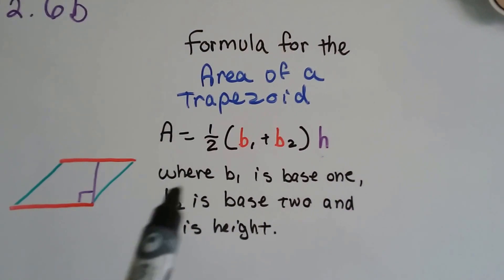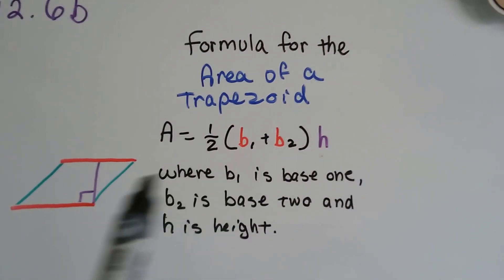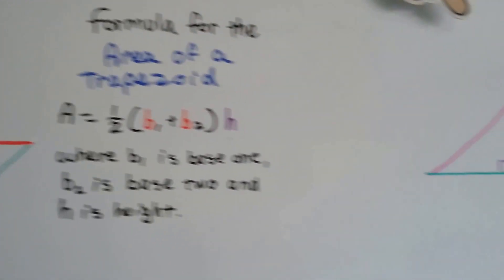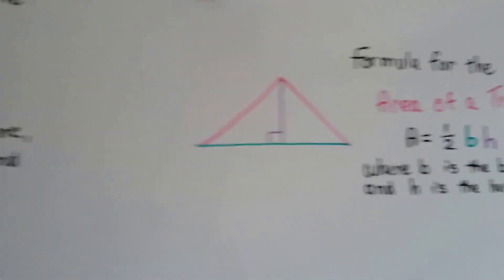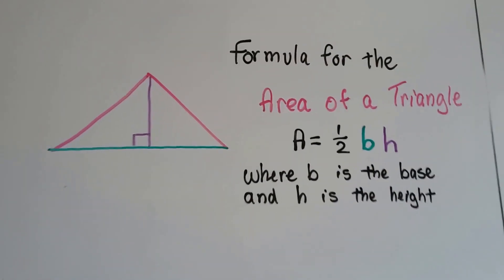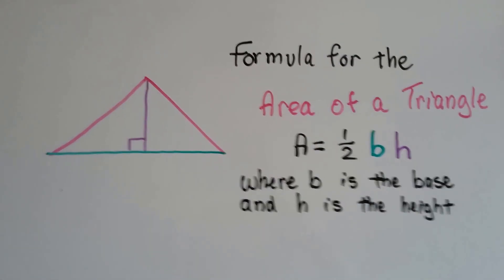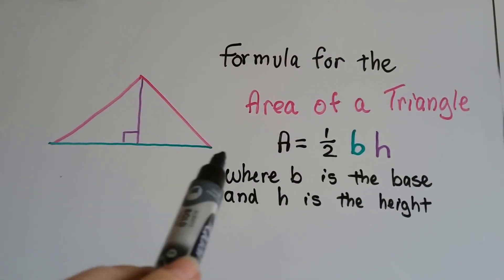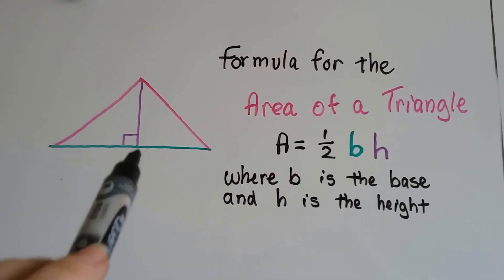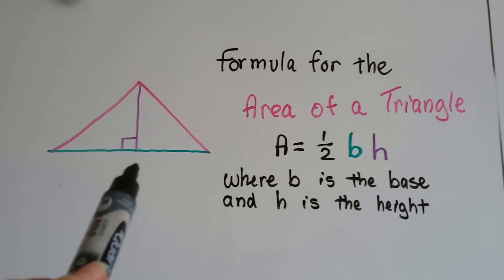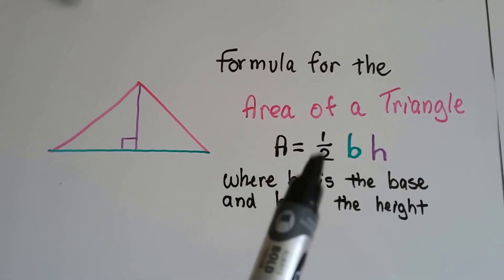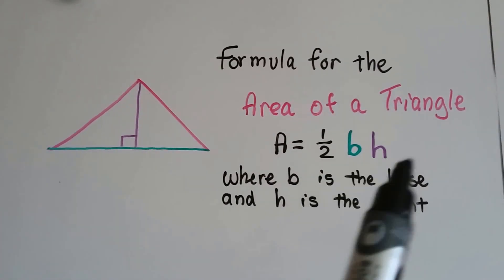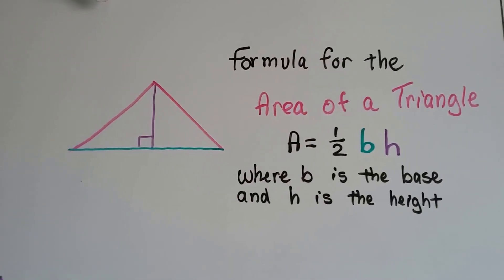We can find a missing base or height by using this formula. The formula for the area of a triangle is the area is equal to half the base times the height. And we can use this formula to find a missing base or height.